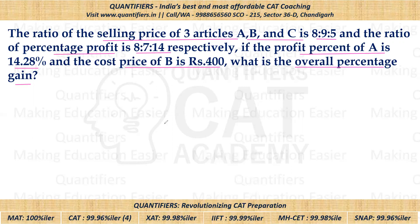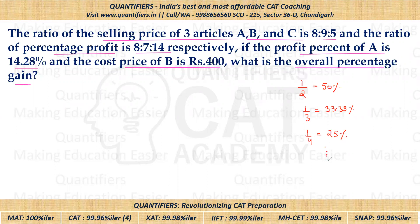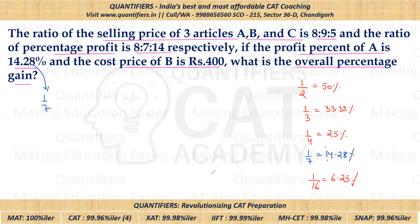Now, this question might feel very calculative and difficult if you are not aware of the percentage chart. For example, 1/3 in terms of percentage is 33.33%, 1/4 is 25%, and so on. You should be aware of all these values at least till 1/16, which is 6.25%. The key here is that 14.28% equals 1/7 as a fraction. If you know this, the question becomes easy; otherwise it would be very difficult to solve.